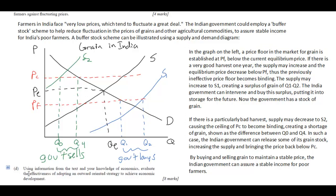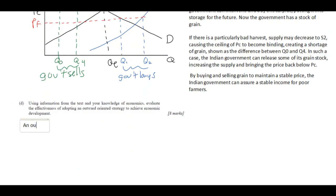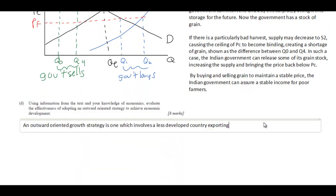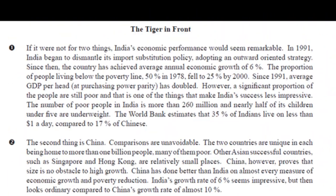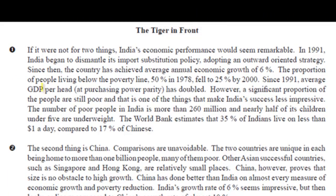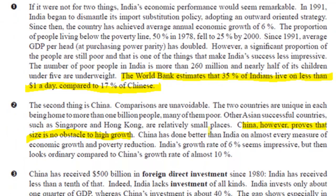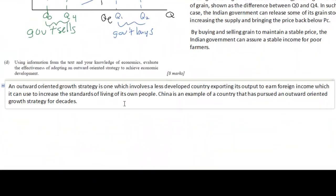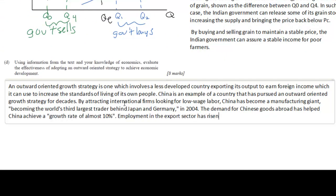Moving on to Part D — the Evaluation. This evaluation is pretty typical. It asks about the effectiveness of an outward-oriented growth strategy for economic development. Anytime you're doing evaluation you need to include information from the extract.